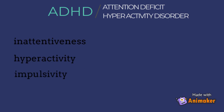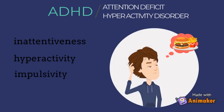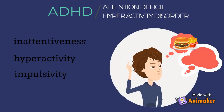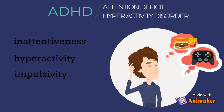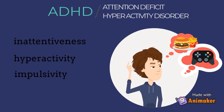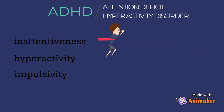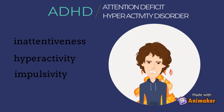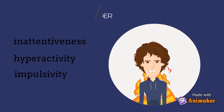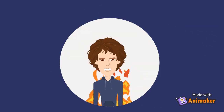Inattentiveness means the child is easily distracted, not able to follow all directions, and loses track of things. Hyperactivity is when the child gets bored easily or has trouble staying still. Finally, impulsiveness is when the child interrupts others and has intense emotional reactions.